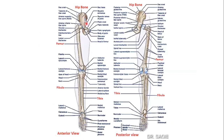These are all the complete bones of the lower limb. This is the hip bone, this is the thigh bone femur, and leg bones. Medially is the tibia and laterally is the fibula, and these are the foot bones. This is the anterior view and this is a posterior view of all these complete bones of the lower limb.